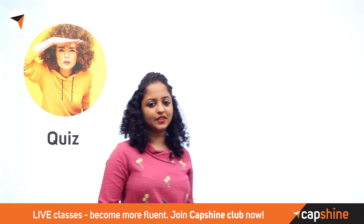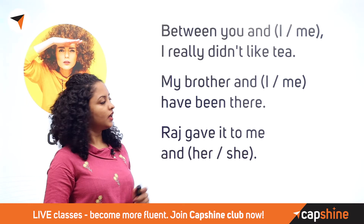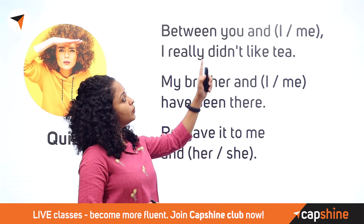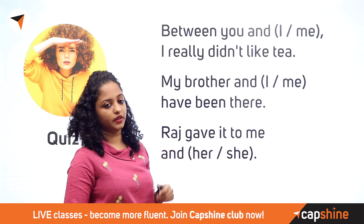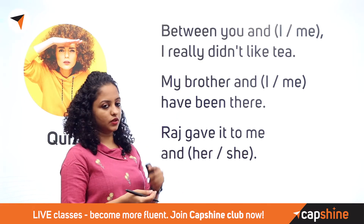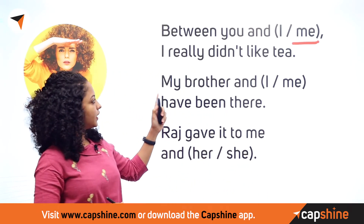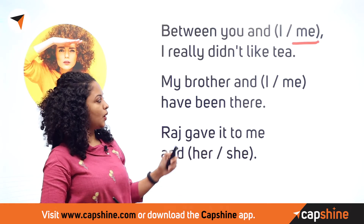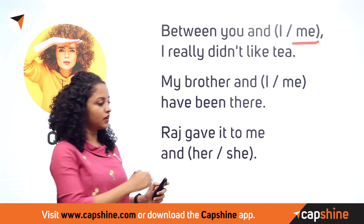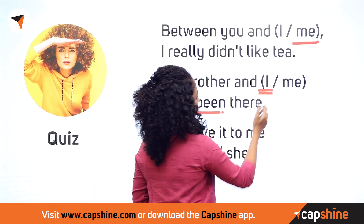Next is a pop quiz — what is subject pronoun and object pronoun? First statement: between you and dash, I really didn't like it. Between you and me — the correct answer is me. Second statement: My brother and dash have been there. My brother and I have been there — the correct answer is I, because have been is your action.